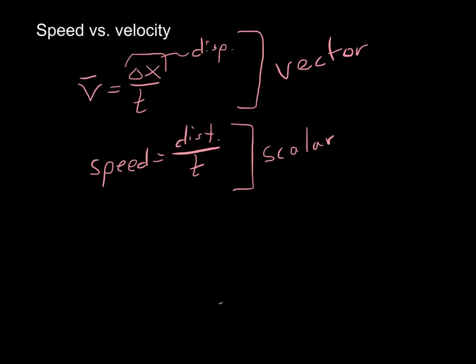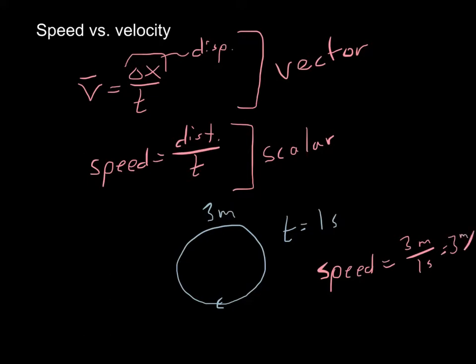So maybe one important key difference here. Let's imagine traveling in a circle, and this circle, to go around the circle, it covers a distance of three meters to go all the way around. And let's say it took us a time of, I don't know, one second to get all the way around the circle. Well, let's calculate our speed first. Speed would be pretty easy. Our distance, three meters to get around the circle, divided by our time of one second would give me a speed of three meters per second.